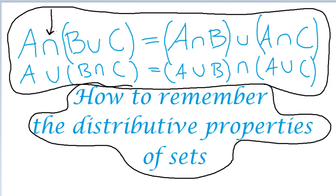Here, the intersection could be on the outside and the union is on the inside, or the union could be on the outside and the intersection is on the inside.